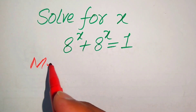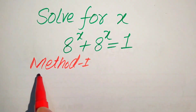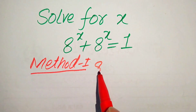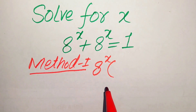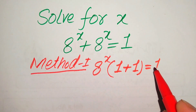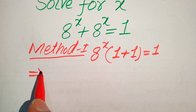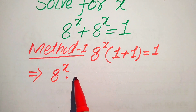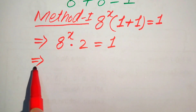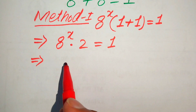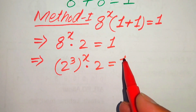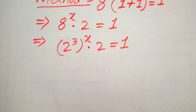Here we move towards our first method. In the first method, you see that both of these terms involve 8 to the power of x, so we will take 8 to the power of x as a common factor. We get 8 to the power of x multiplied by (1 + 1) equals 1, which gives us 8 to the power of x times 2 equals 1. Now we break 8 into its prime factors: 8 equals 2 cubed, so we have (2 cubed) to the power of x multiplied by 2 equals 1.